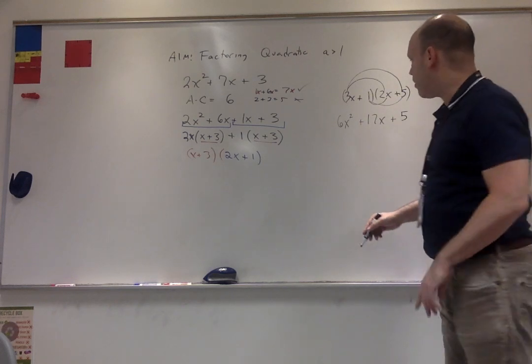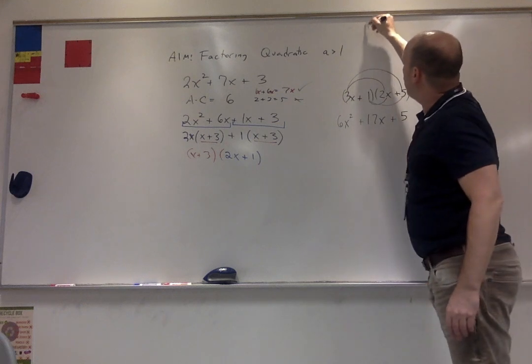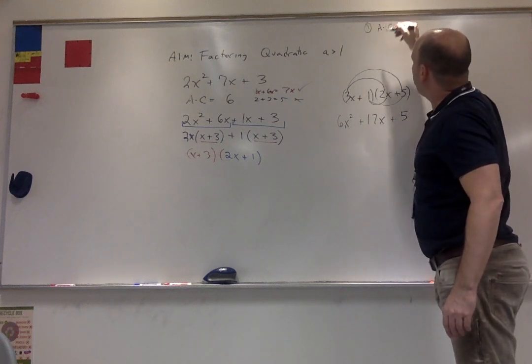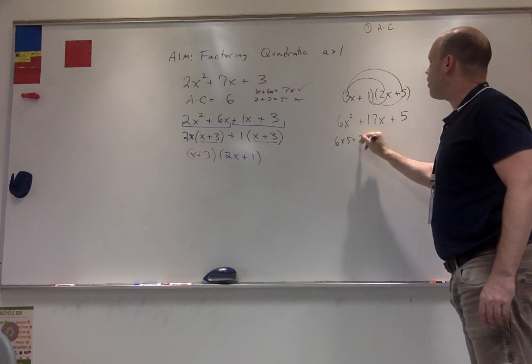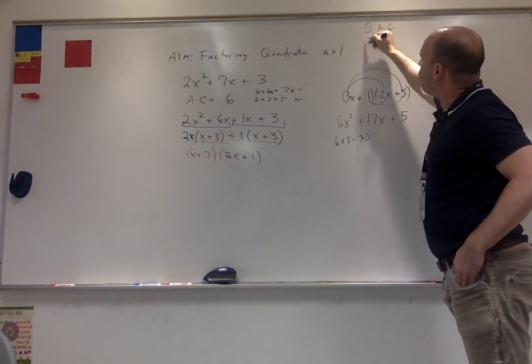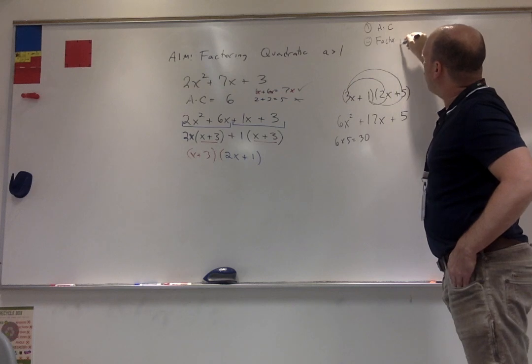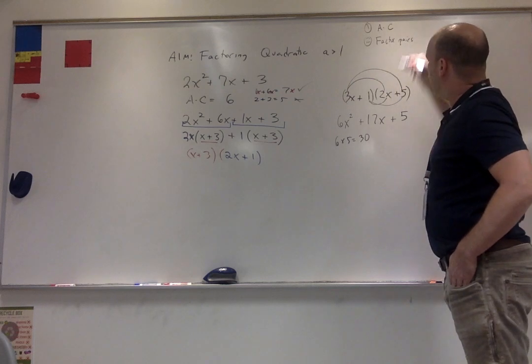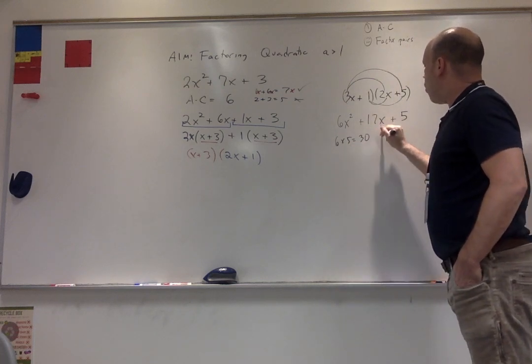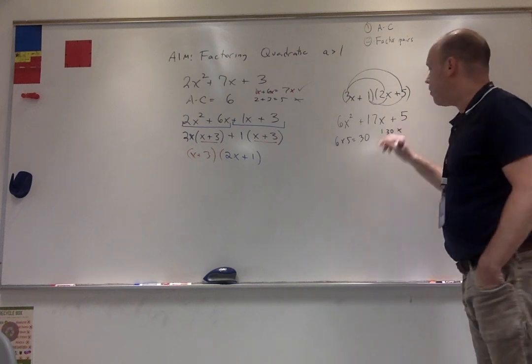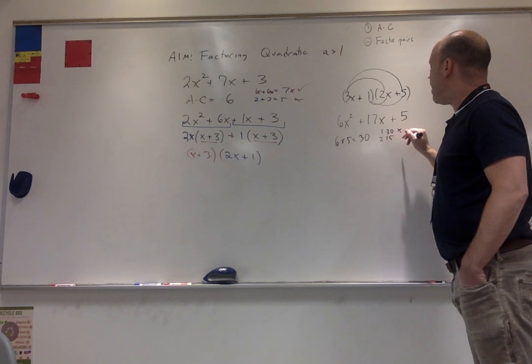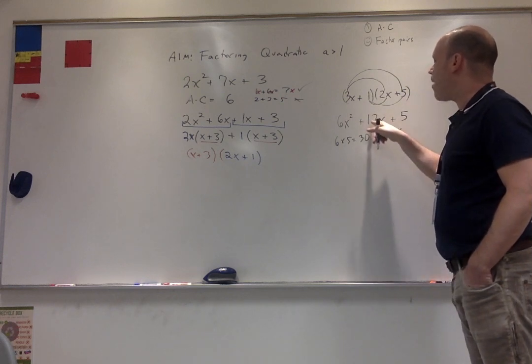Next, step 1, a times c. Well, 6 times 5 equals 30. Step 2, factor pairs. Well, this is 1 times 30, that's not a match with 17. How about 2 and 15? That's a match with 17.